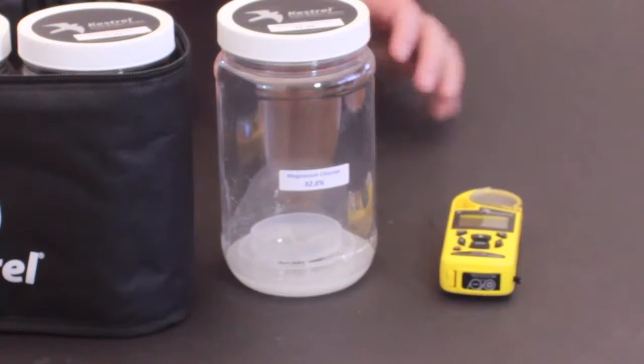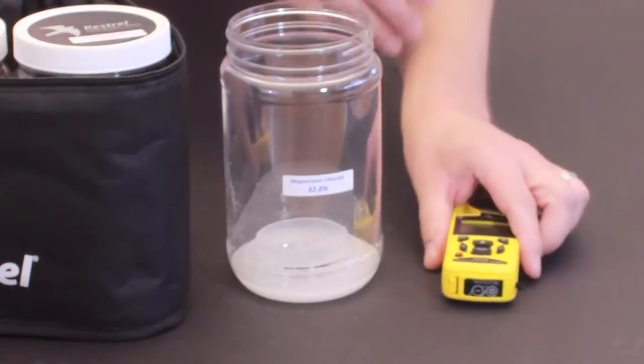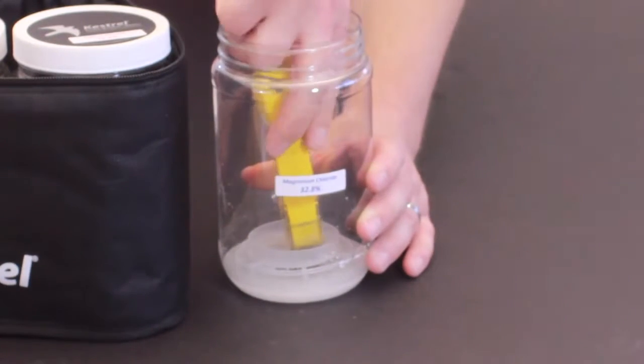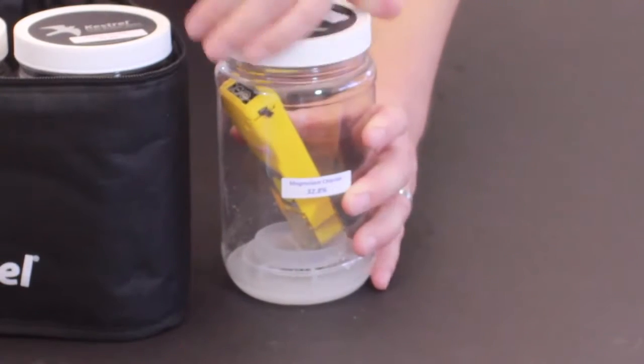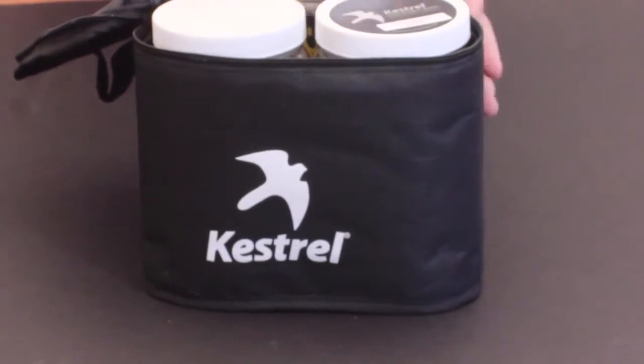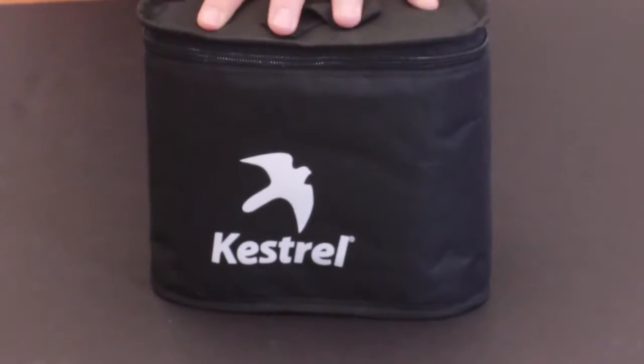So once the Start 1 has started the countdown from 3600 seconds, let's open up the magnesium chloride chamber. If we had a lanyard, we'd wrap it around here just to keep it out of the mixture. Close this lid tightly, and then we'll put it into our RH calibration kit. Zipper it up and leave it untouched for an hour.